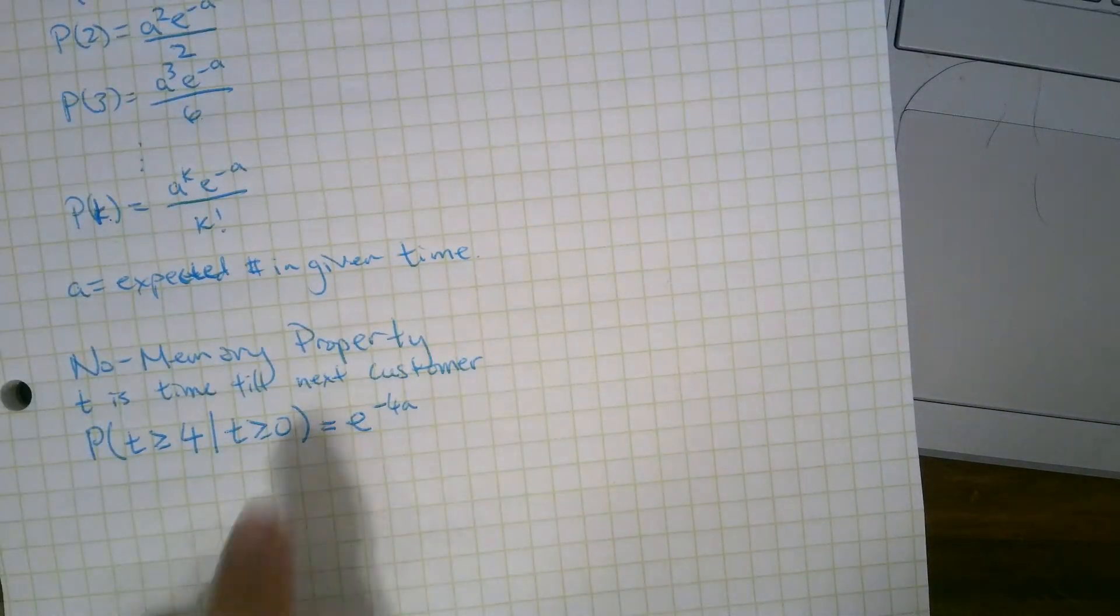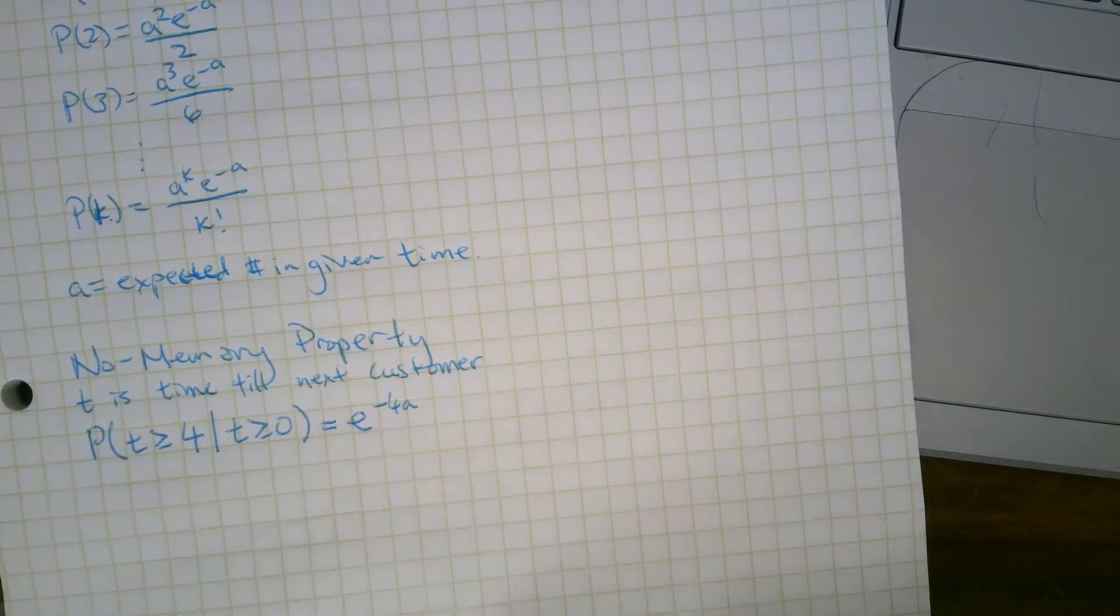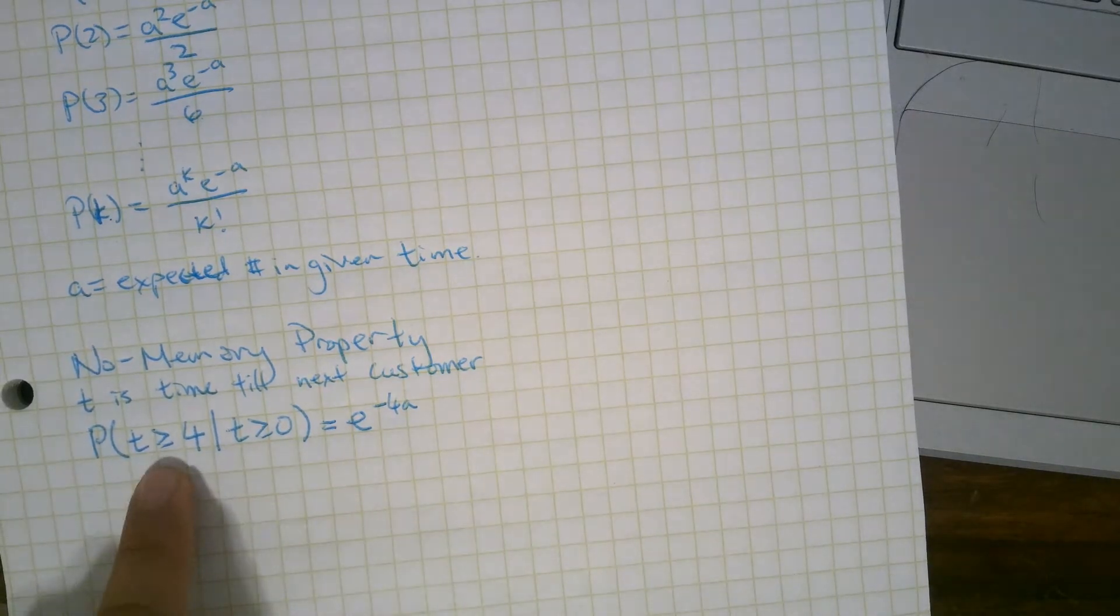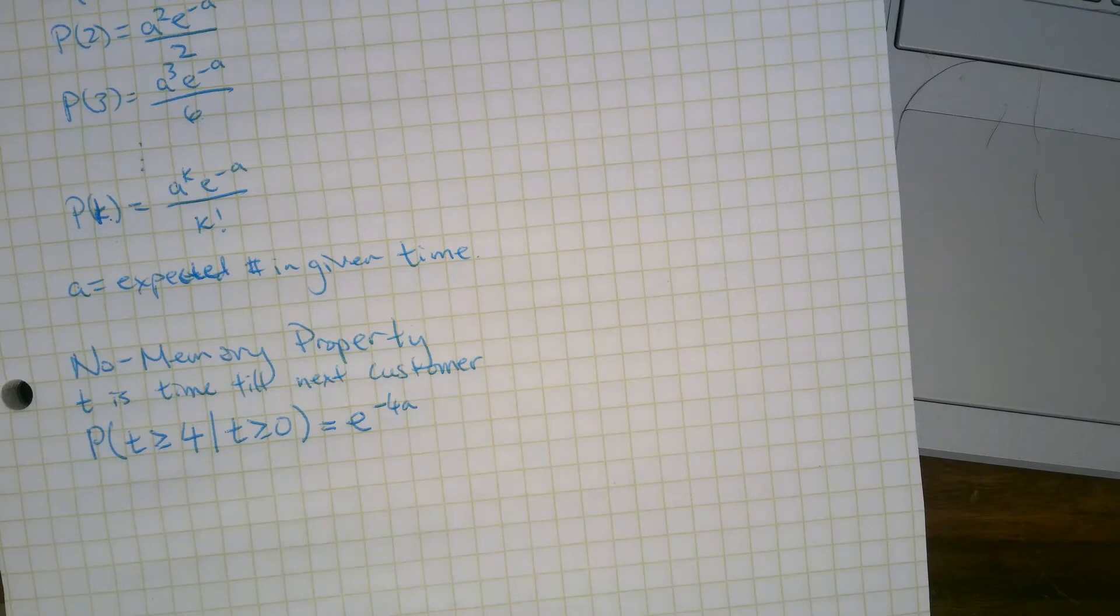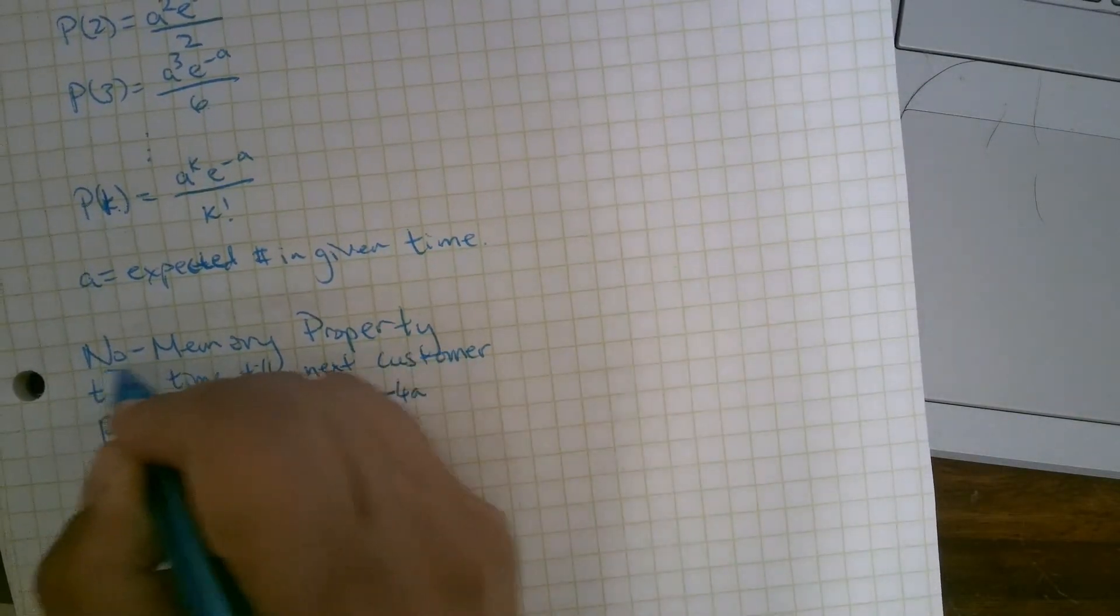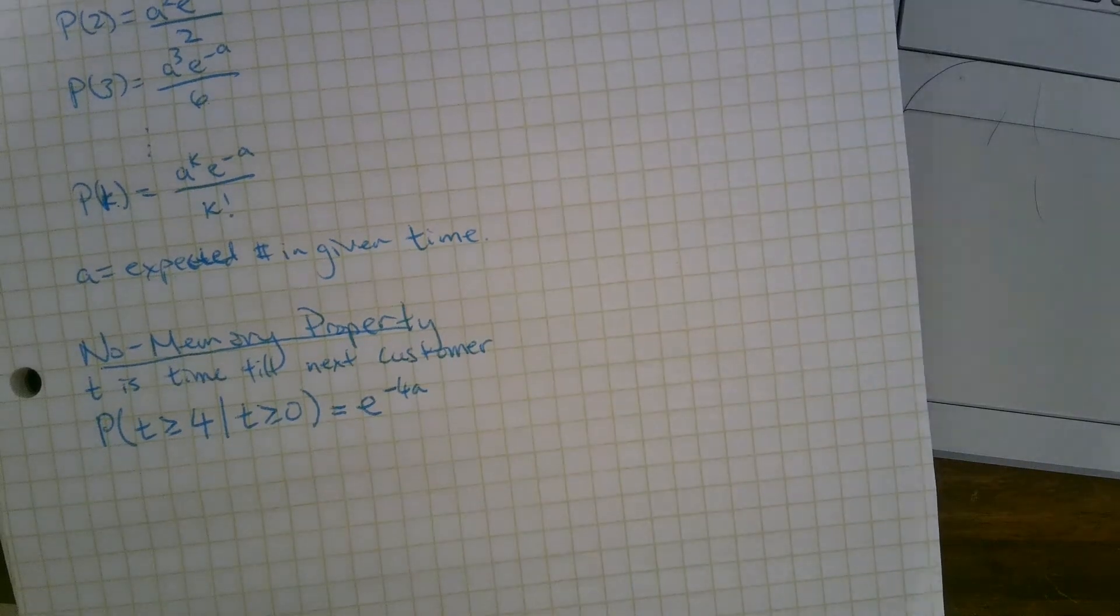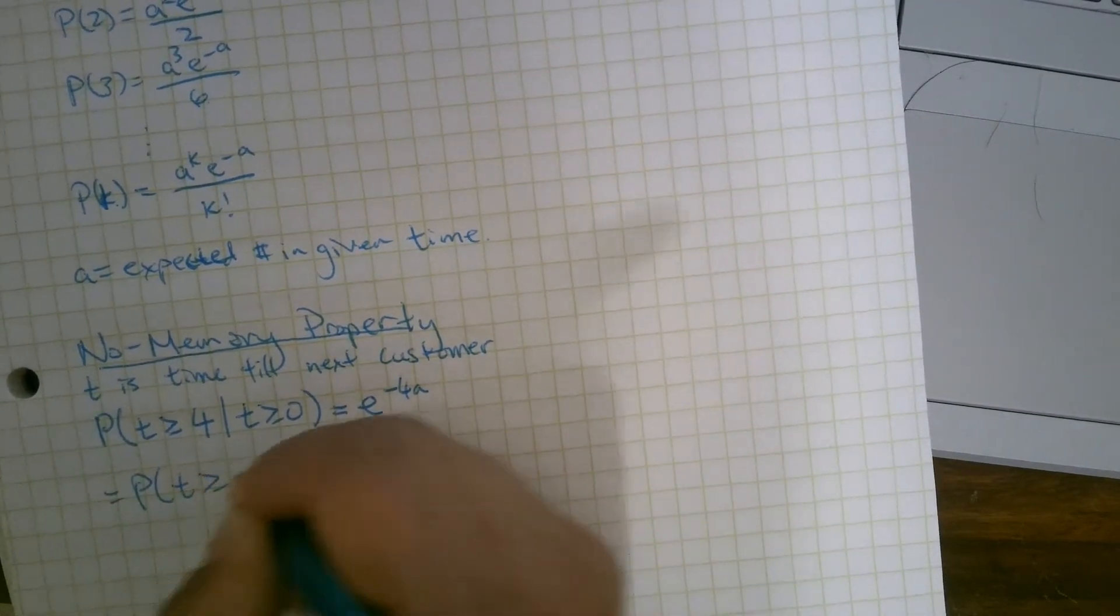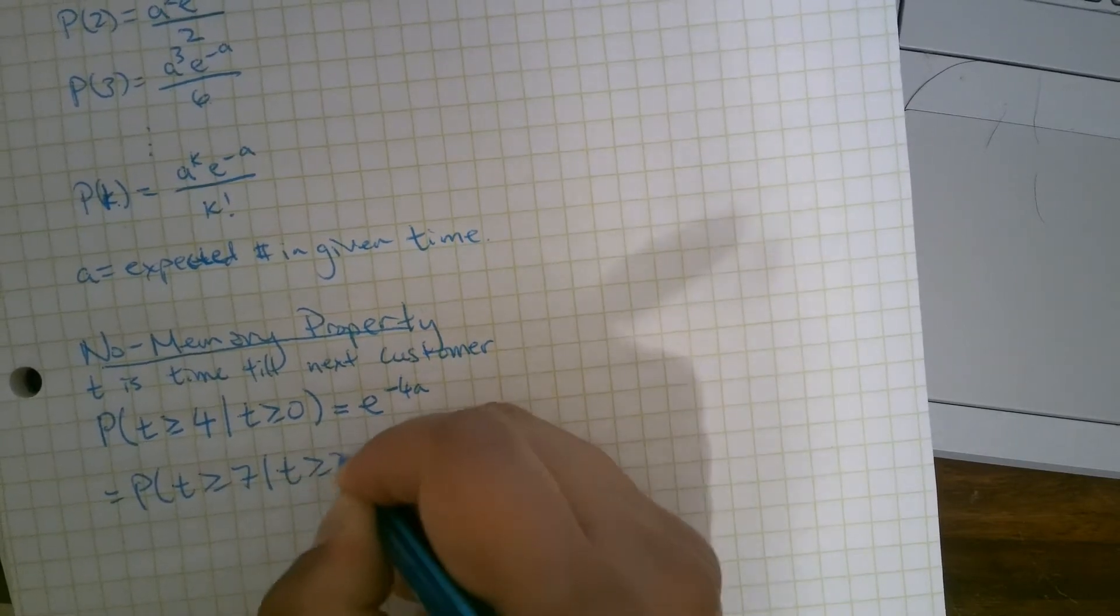Because in time 4, you expect 4A customers, so the probability of no customers, or probability of waiting at least 4 units of time till the next customer, it's going to be E to the negative 4A. And the no memory property says that this is the same as, let's say, the probability that T is greater than or equal to 7, given that T is greater than or equal to 3.